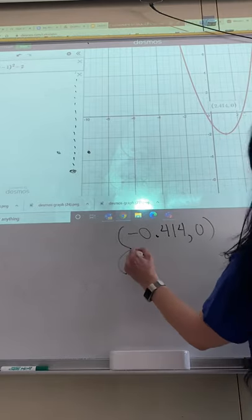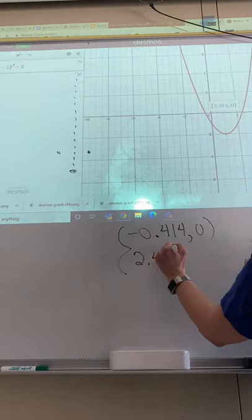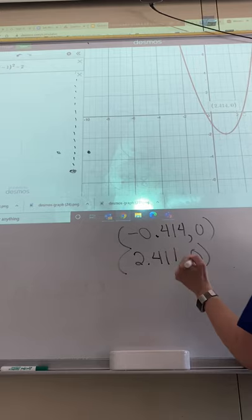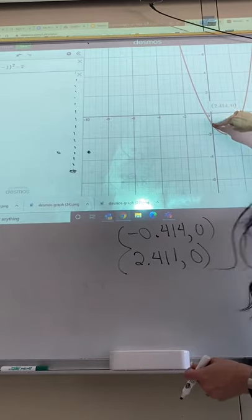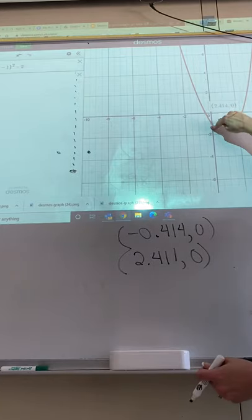And that is at 2.414 comma zero. Okay, so those are my roots. And then while I'm here, I'm going to just go ahead and see what point that is. That's going to be our